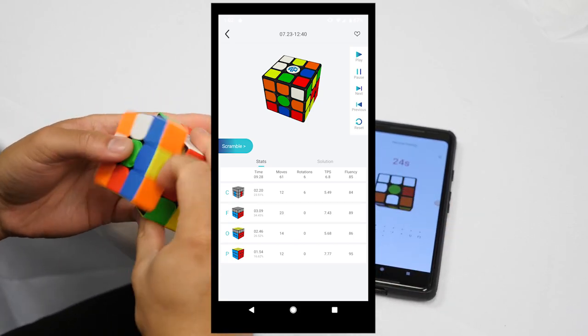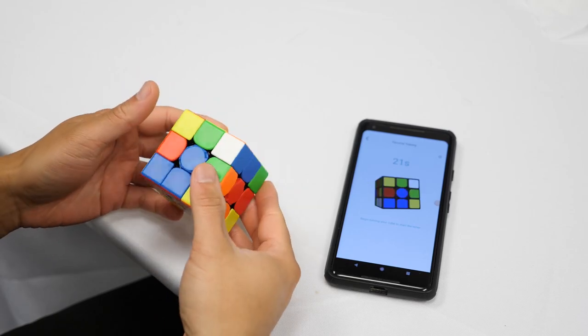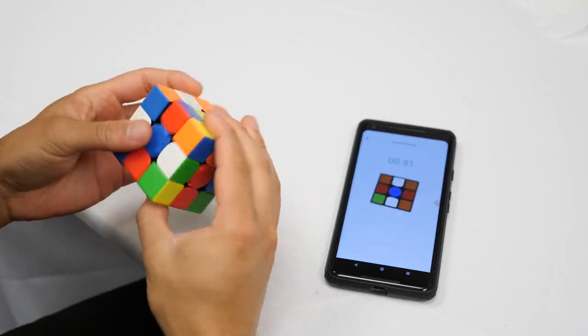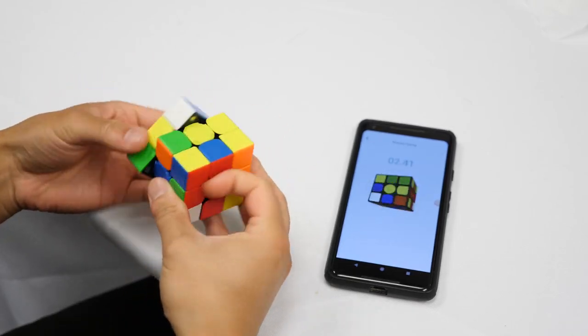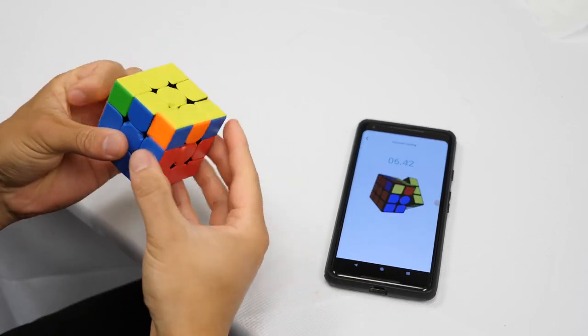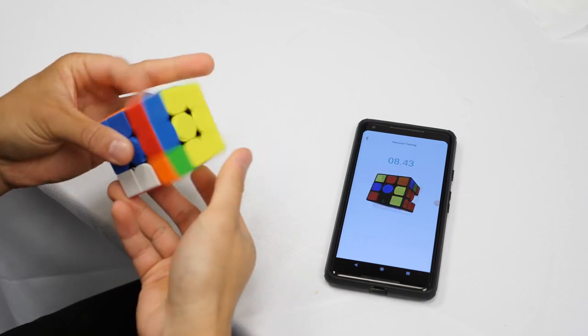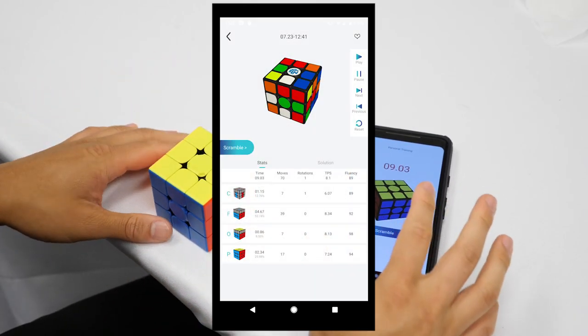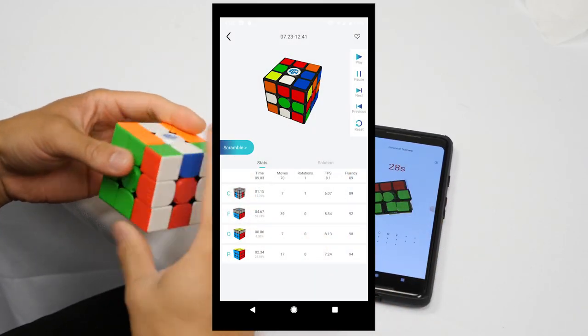To compensate, it looks like my fluency scores are kind of good. Just FYI, fluency score is a stat GAN invented to measure how continuous your turning is. It goes up to 100, and the closer you get to 100, the smoother your turning is. If you have a lot of pauses, you'll get a lower score. I'm really curious about how people with really sharp lookahead will score in this category.